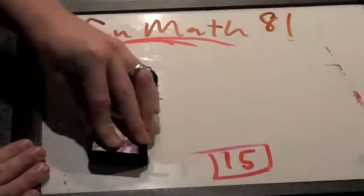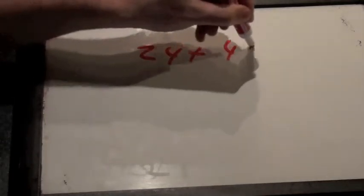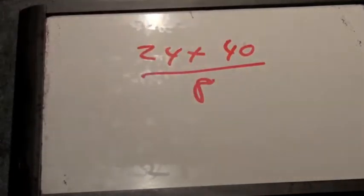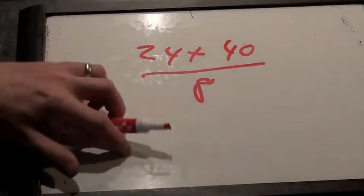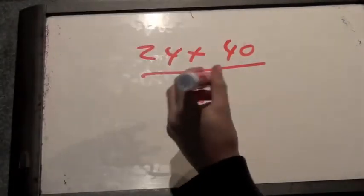And there's one other thing we can do with the distributive property. The opposite of the distributive property is called factoring. So it's important to understand how to do factoring. And so when we have an expression, let's say it's 24 plus 40, whole thing divided by 8, and we want to simplify this, we can first factor an 8 out of the top of each of those expressions.